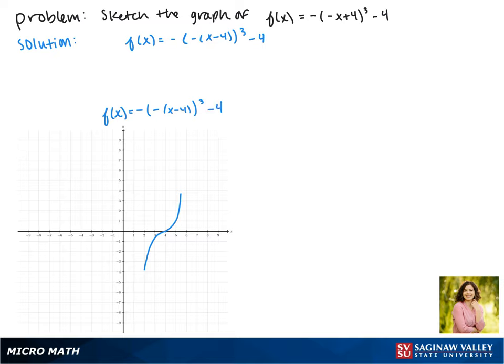And for our vertical translation, because we're subtracting 4 on the outside, this moves our function down four spaces, so that it passes through the point (4, negative 4). And this is the graph of our function.